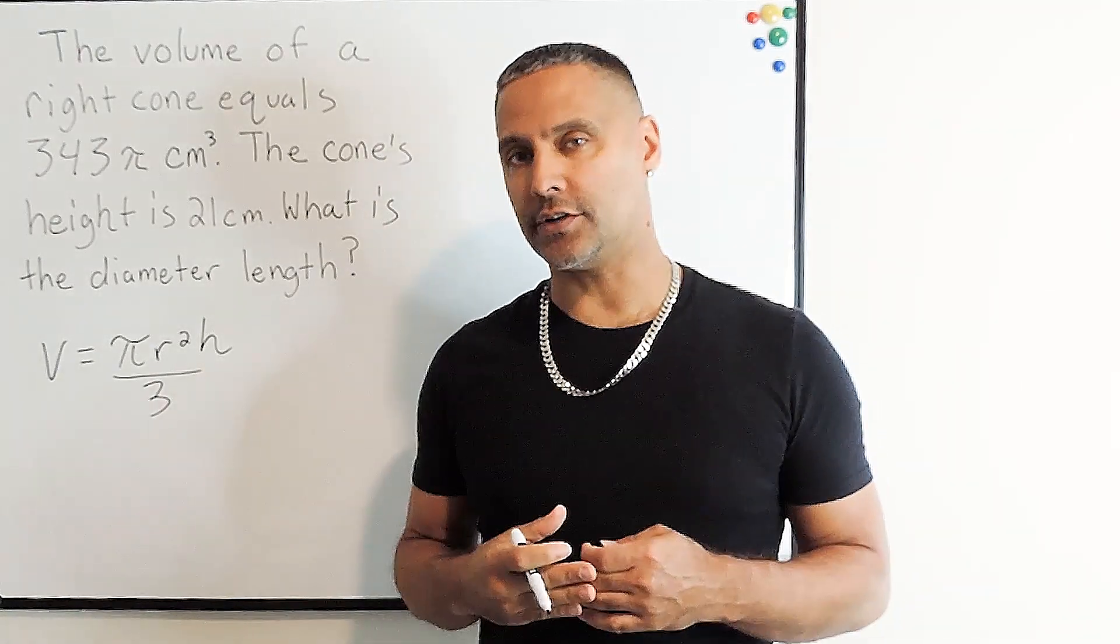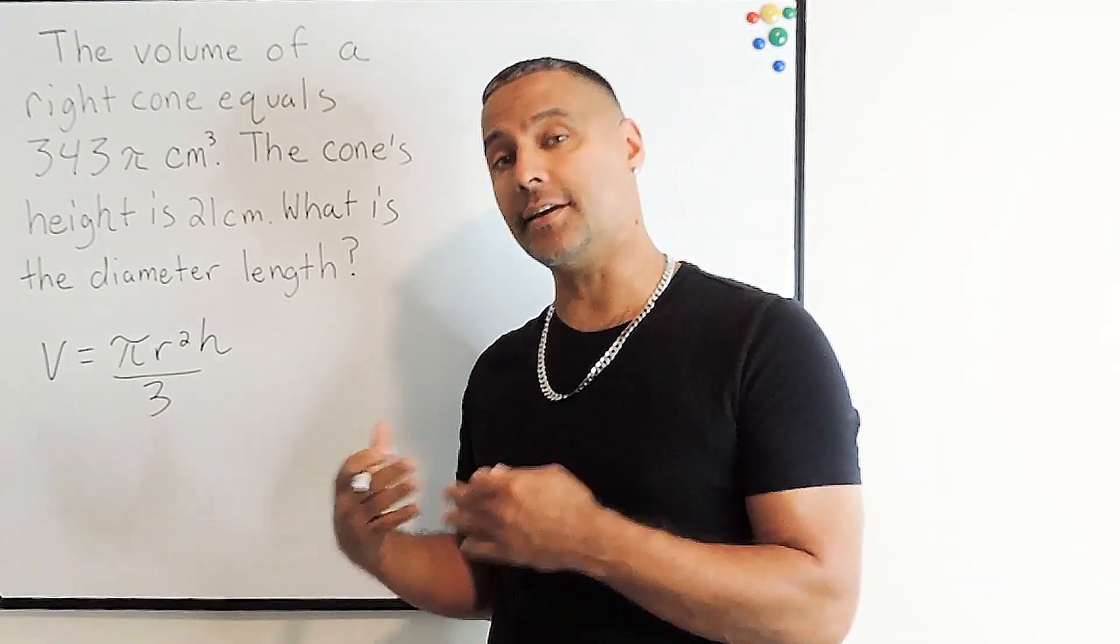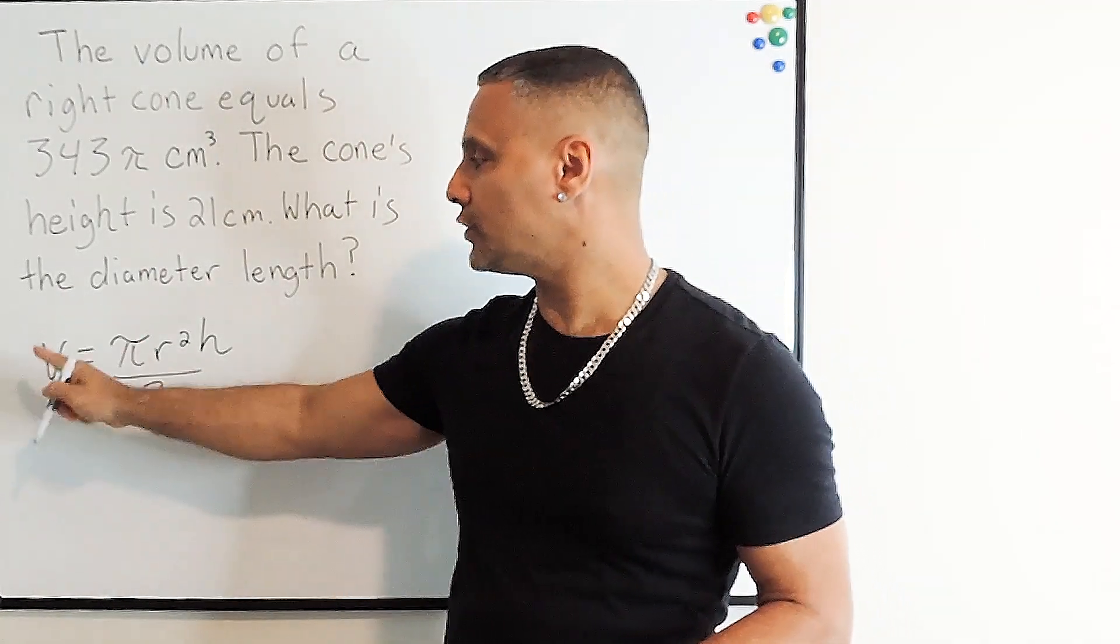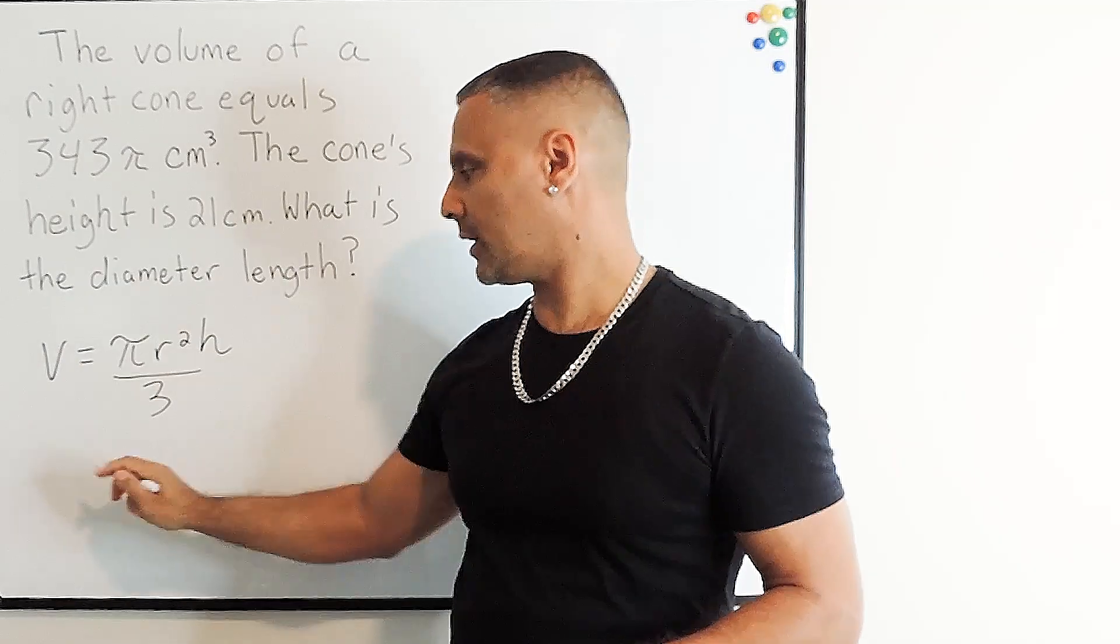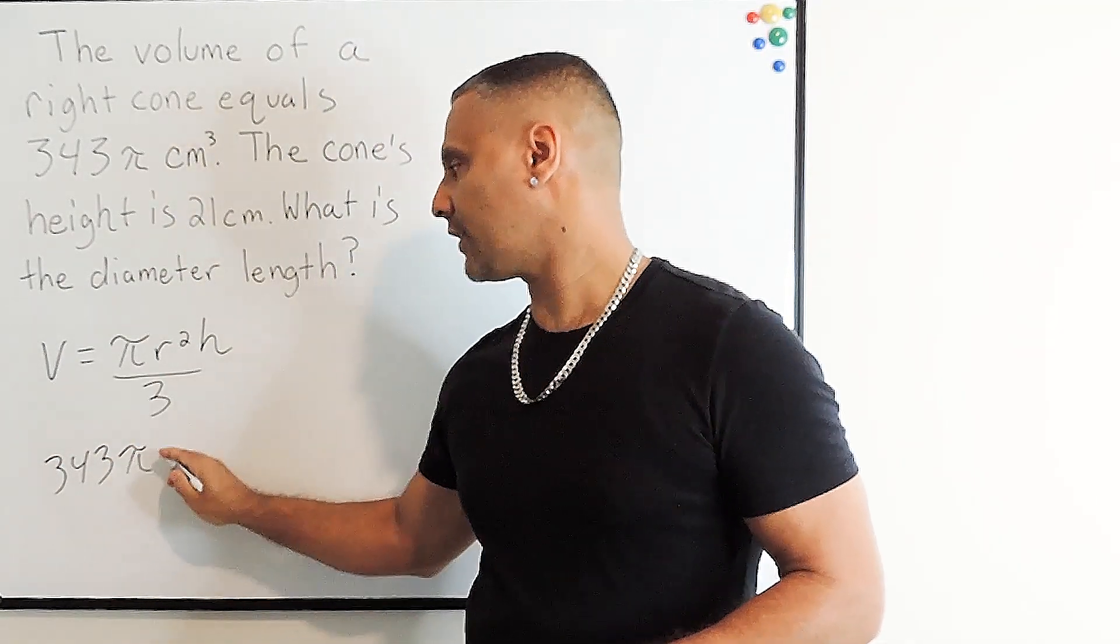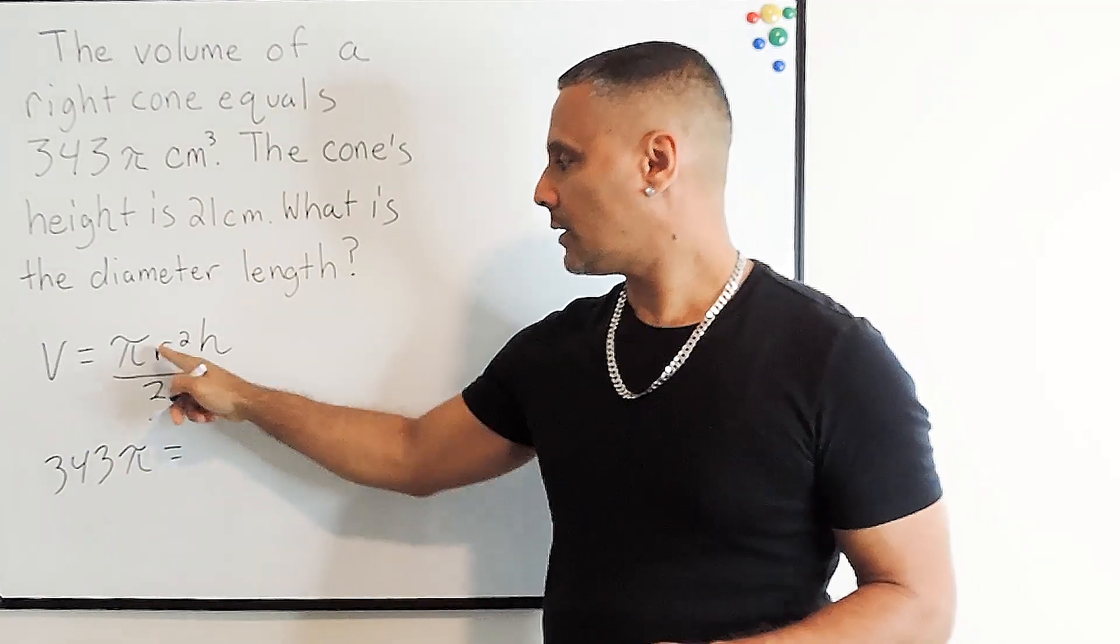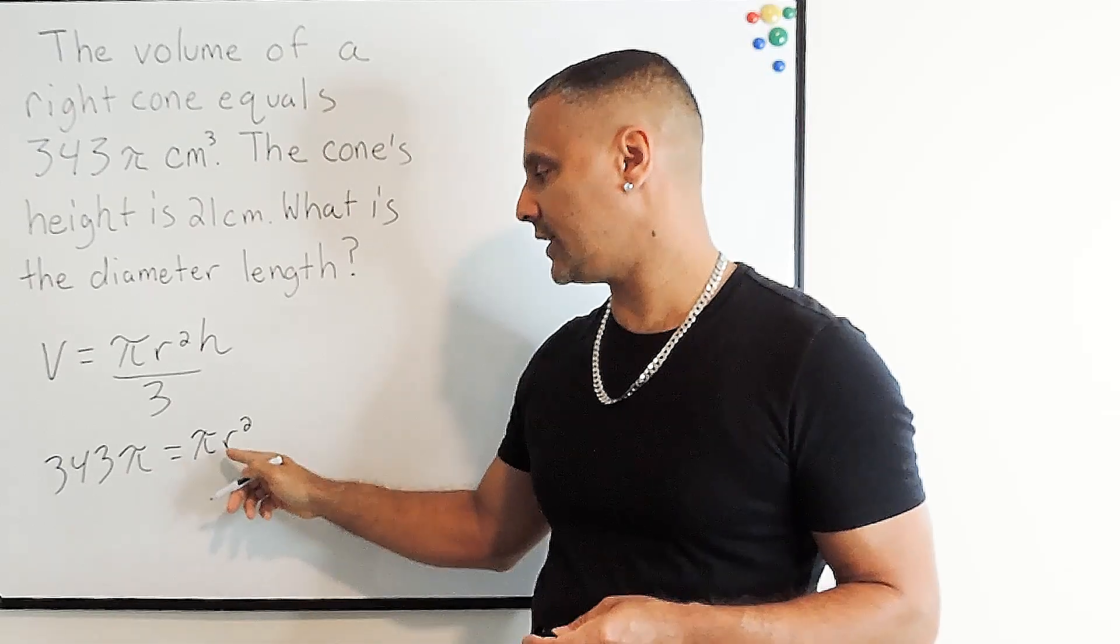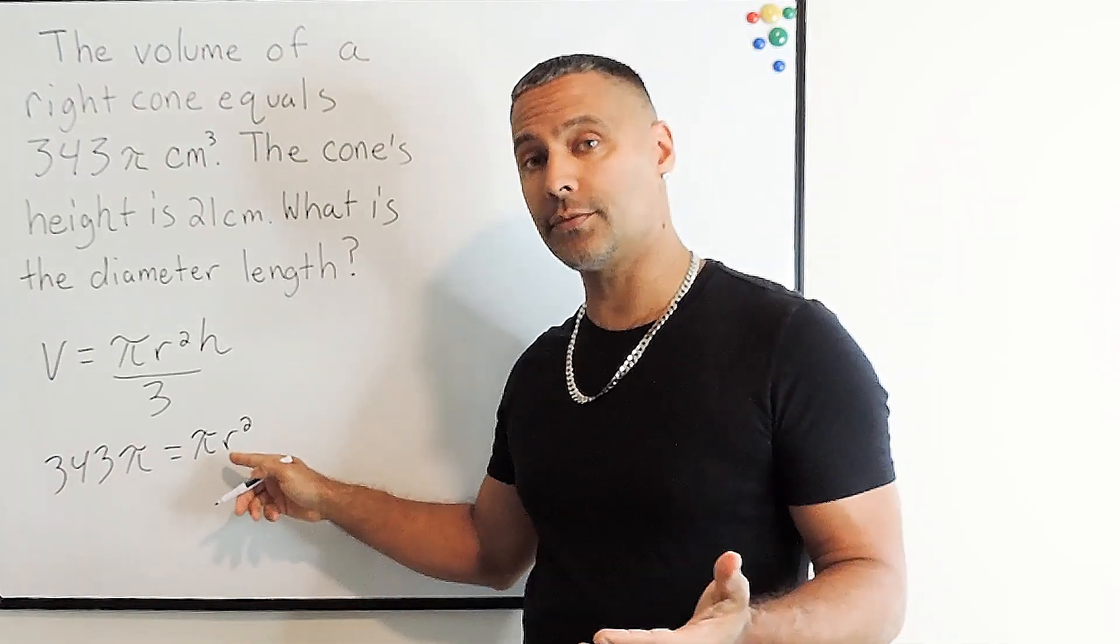Next we're going to take the information given in the problem and plug it directly into the equation. We're going to substitute V with the given volume of 343π, and set that equal to πr². We don't know what the radius is, that is not given in the problem, so we have to leave the variable r for now.